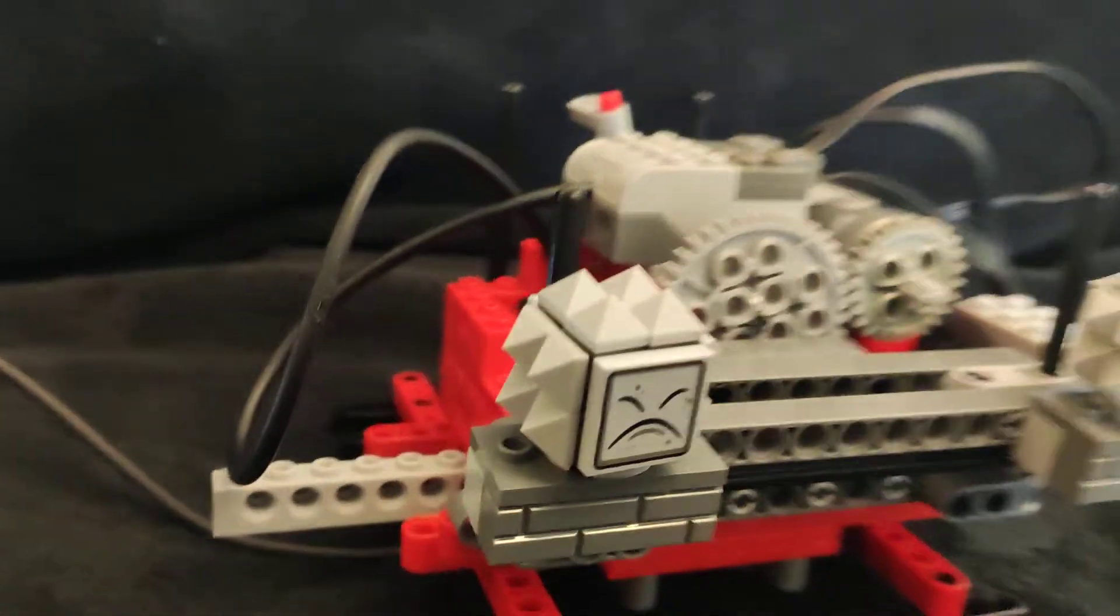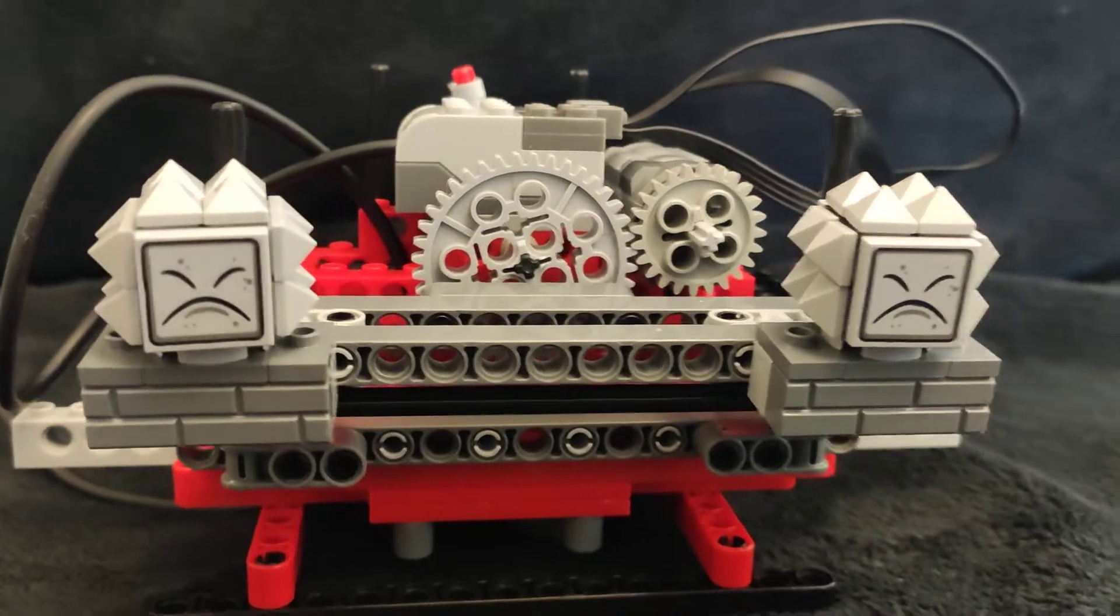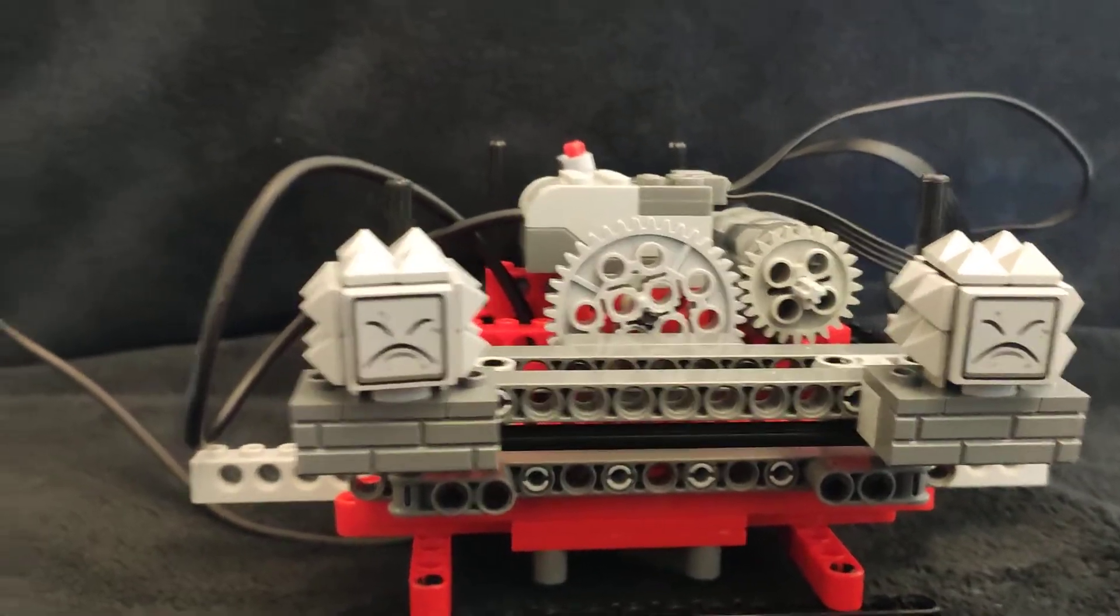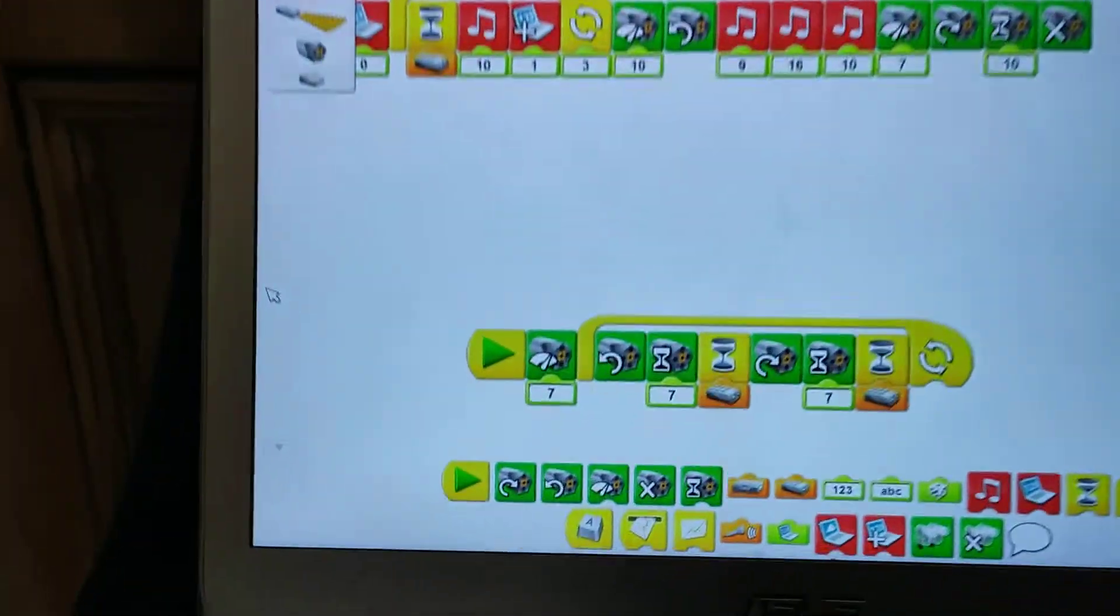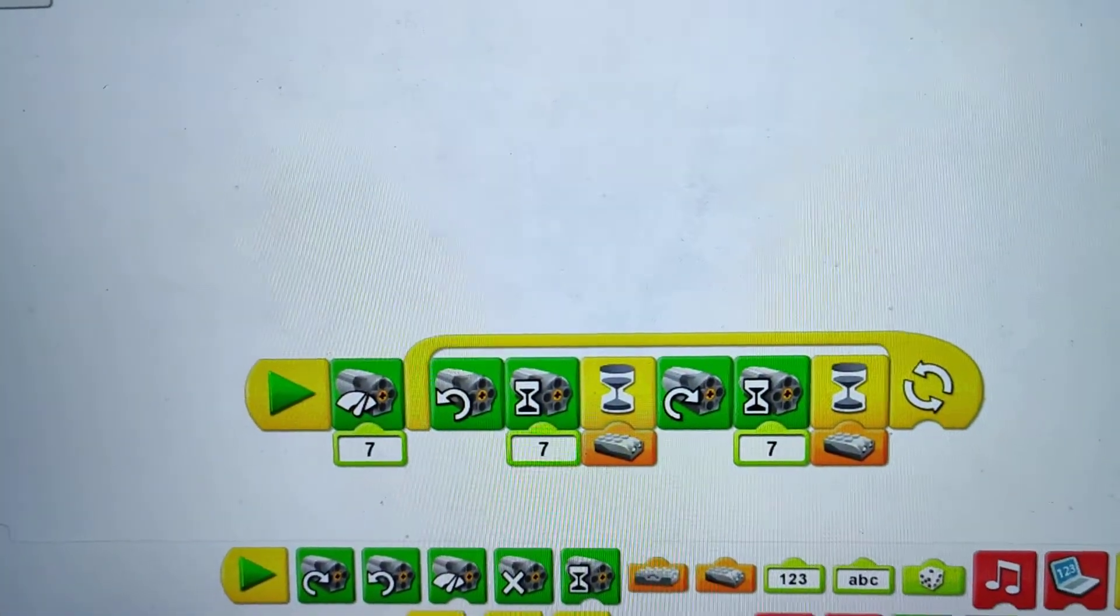It ended up being a fairly complicated, probably more complicated than it needs to be structure. But if I now show you the programming, the WeDo hub as you can see is on top and there's a sensor here.